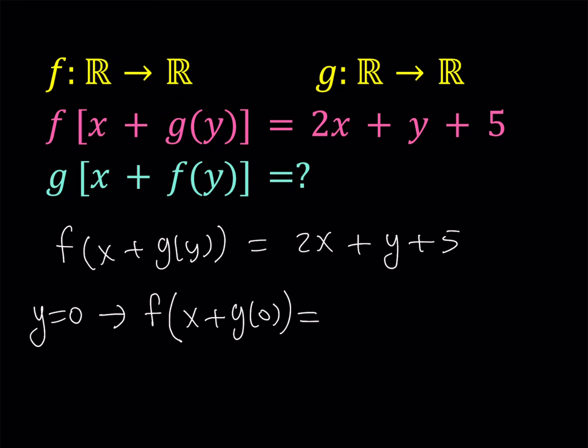Now one of the strategies that we almost always use with functional equations is replacing x and y with certain values. Especially 0 and 1 are very good values. So in this case, I'm going to replace y with 0. And in this equation, I'm getting f of x plus g of 0 equals... Now, you've got to remember one thing here.